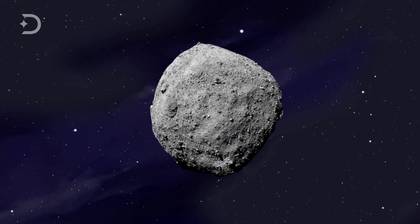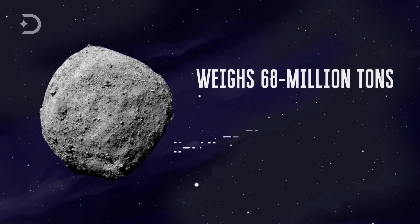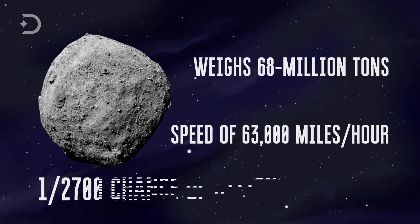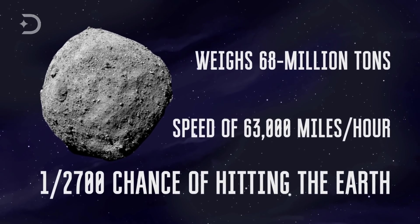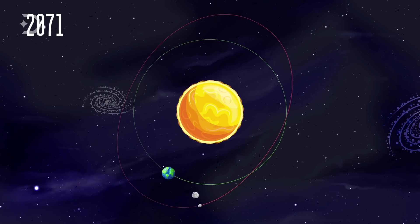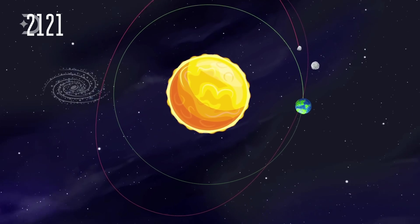This rocky rubble-pile asteroid weighs 68 million tons and has an average orbital speed of 63,000 miles per hour. Bennu has a 1 in 2,700 chance of hitting the Earth, but such an event wouldn't take place until 2175 or 2196. It won't be until the year 2135 that researchers will be able to get a better idea of its collision course with the planet.